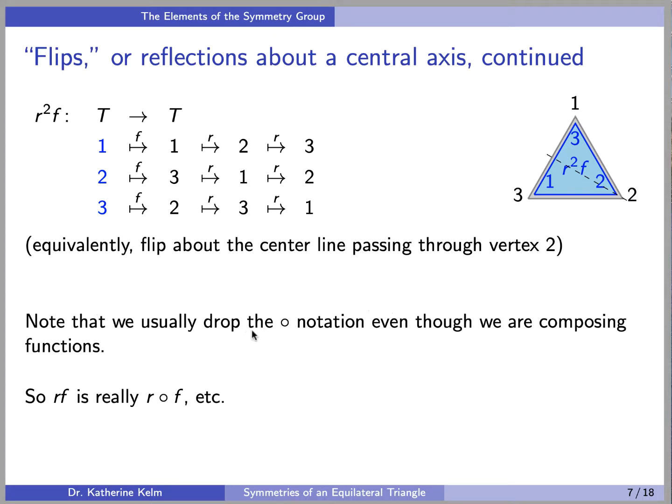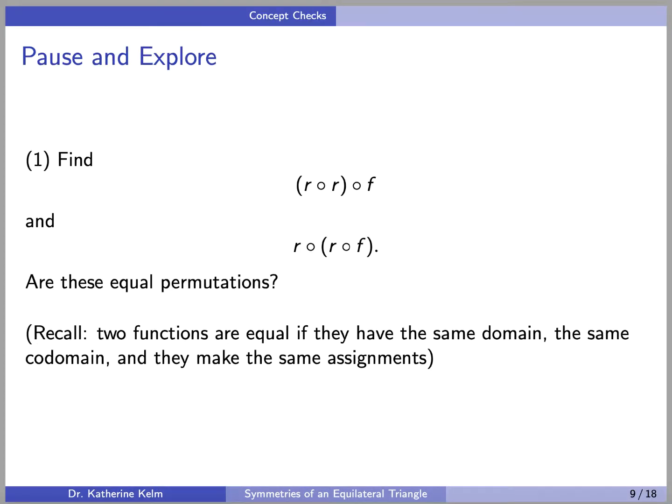So we've mentioned already that we usually drop this circle notation even though we are composing functions. So RF is really R of F, and so on. Okay, so here is the first of several concept checks for this video. I urge you to pause and explore and try to figure out the answer on your own before going on.